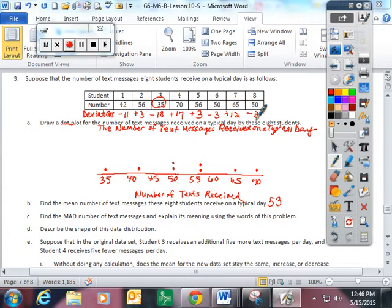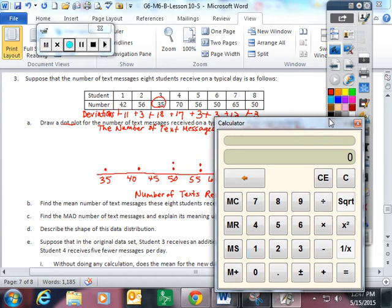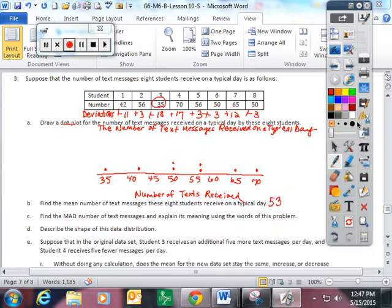Now if I was going to find the MAD, I would have to take all of these and make them absolute, which means the distance they are from 0, so they're really all becoming positive. So now I'm going to add up all the deviations: 11 plus 3 plus 18, all my positive absolute deviations, plus 17, plus 3, plus 3, plus 12, plus 3, and I get 70. And I'm going to divide that by 8. That's going to give me a MAD of 8.75.